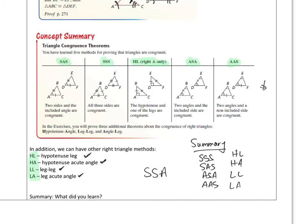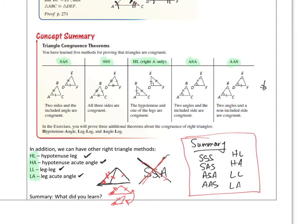The one we cannot use is side-side-angle — or SSA. We cannot use it because you can make two different triangles where the same side-side-angle setup applies: the angle of a big triangle is congruent to the angle of a little triangle, and the side is congruent to both, yet the two triangles are different. That's why side-side-angle cannot be used to prove triangles congruent.